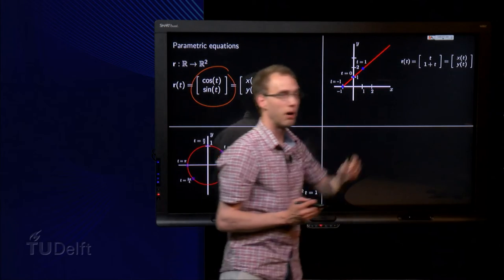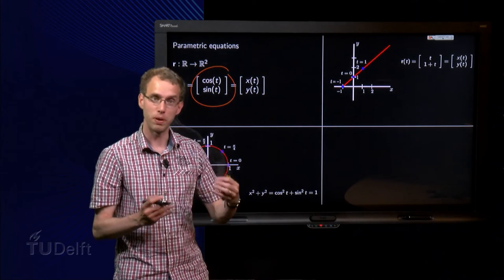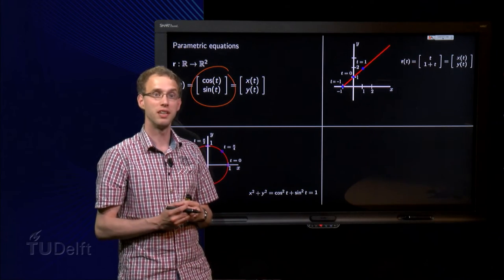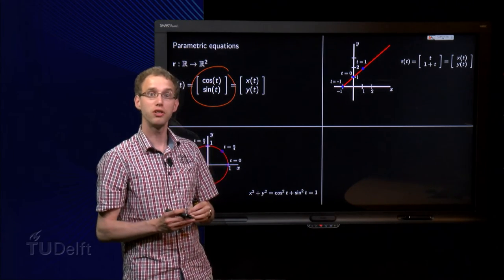If we take (t, 1+t), that's our parametric equation. So x equals t, y equals 1+t. Well, substitute again a few values of t.